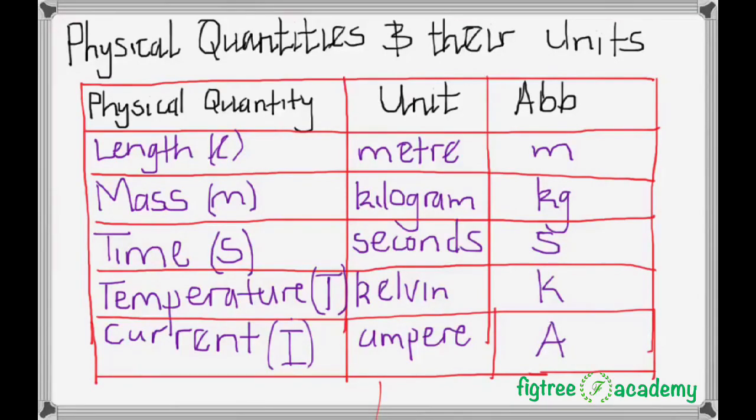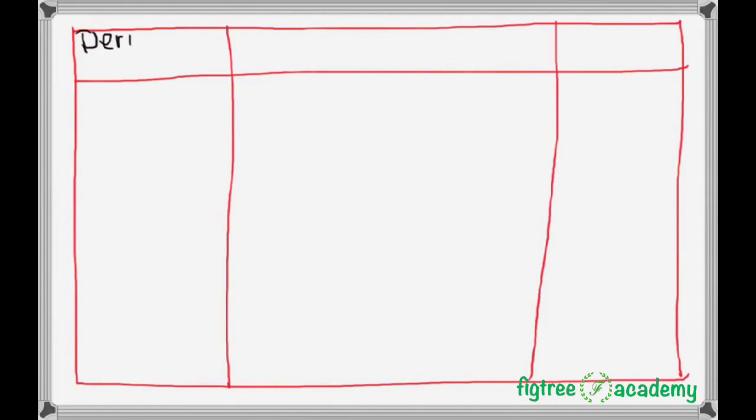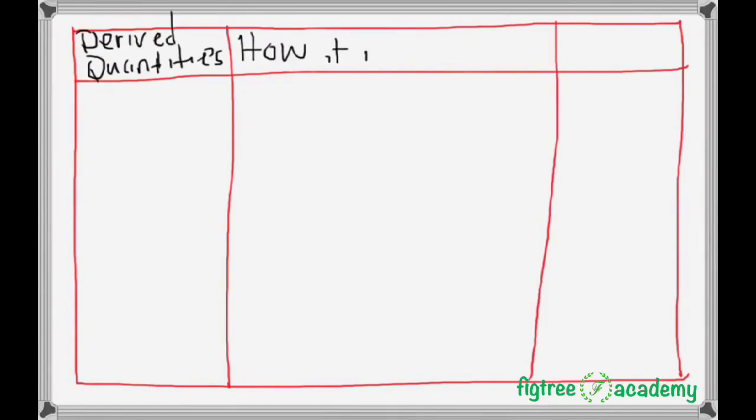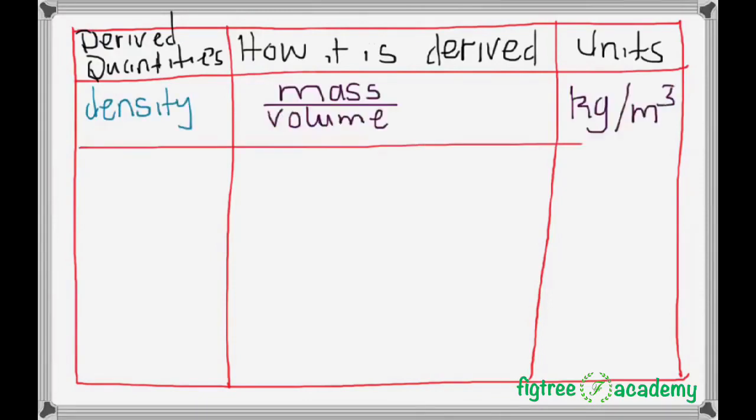Now, the next set of quantities are derived quantities, which are physical quantities derived from base quantities. The following table shows how some of these quantities are derived, and their derived units. Our table here has got three columns, which are derived quantities, how the quantity is derived, and the base units. So, the first derived quantity that we have here is density.